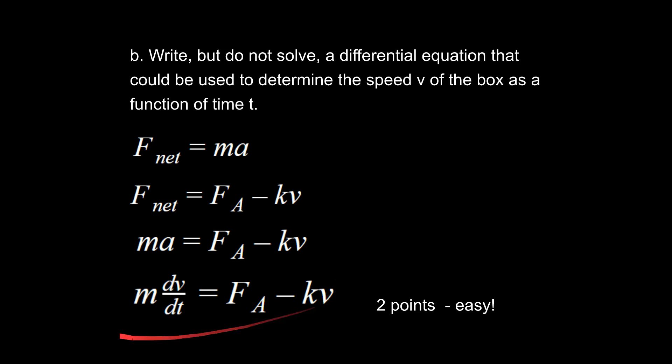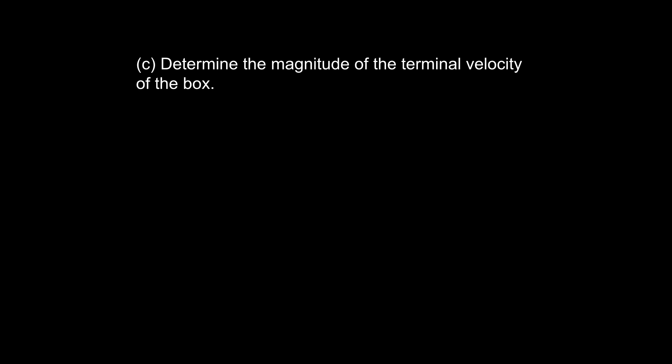That gets us two more easy points. So far there are six easy points in this problem. Part C asks us to determine the magnitude of the terminal velocity of the box. At terminal velocity, the forward force is exactly equal to the backwards force — another way of saying that is that acceleration equals zero.